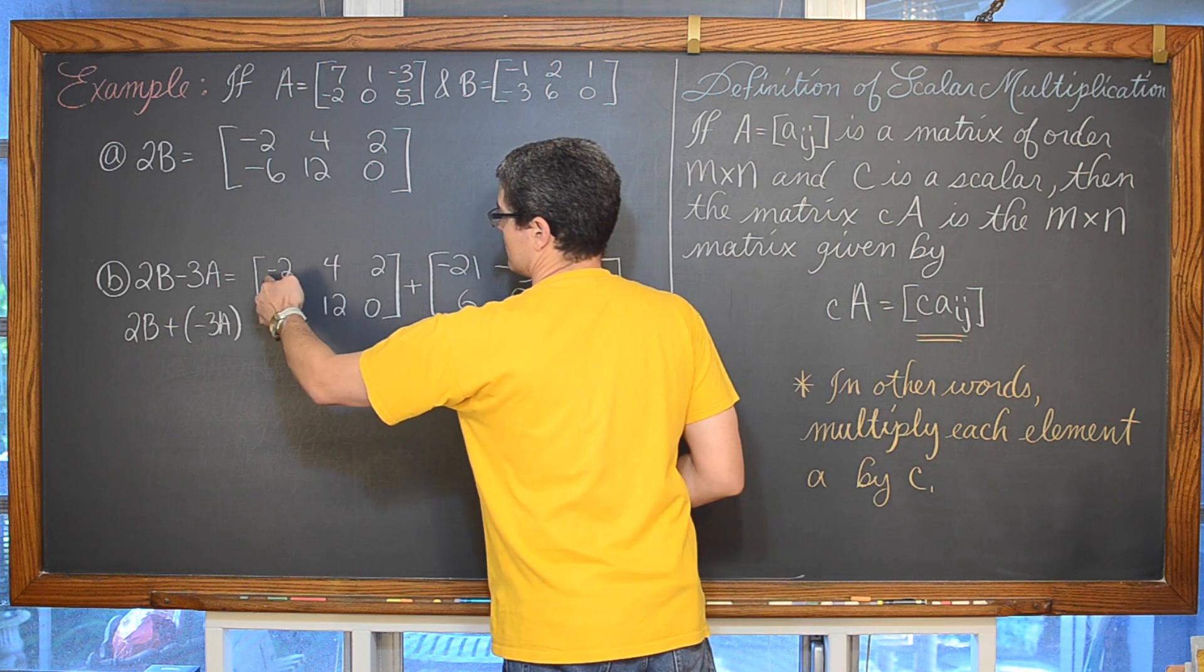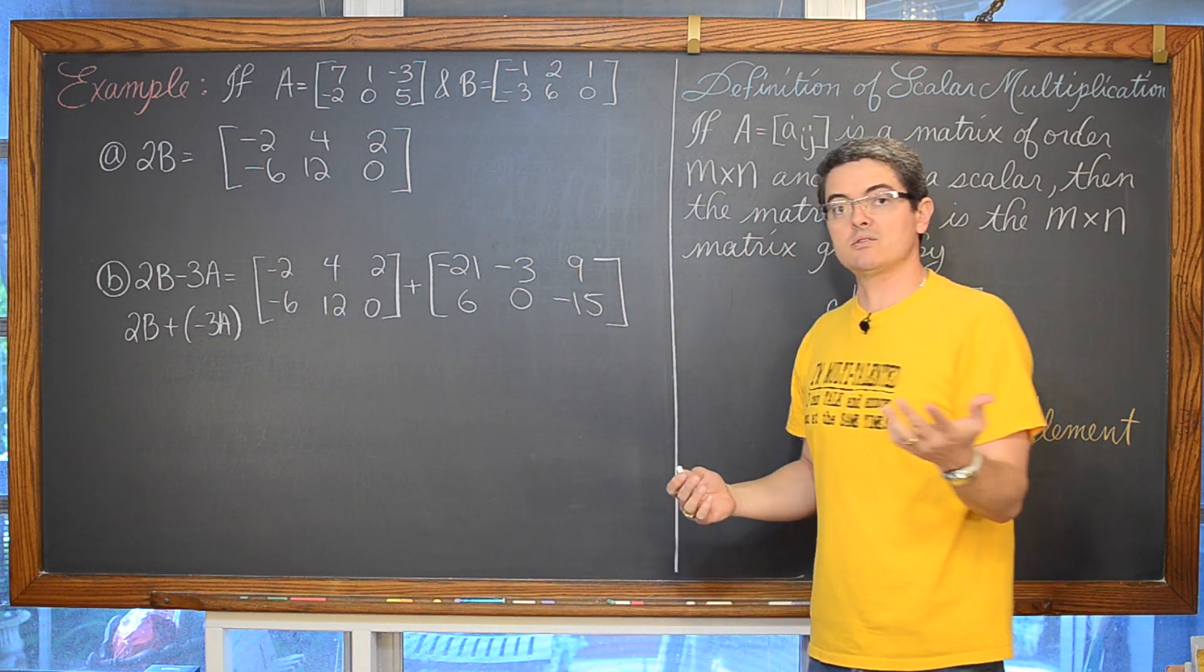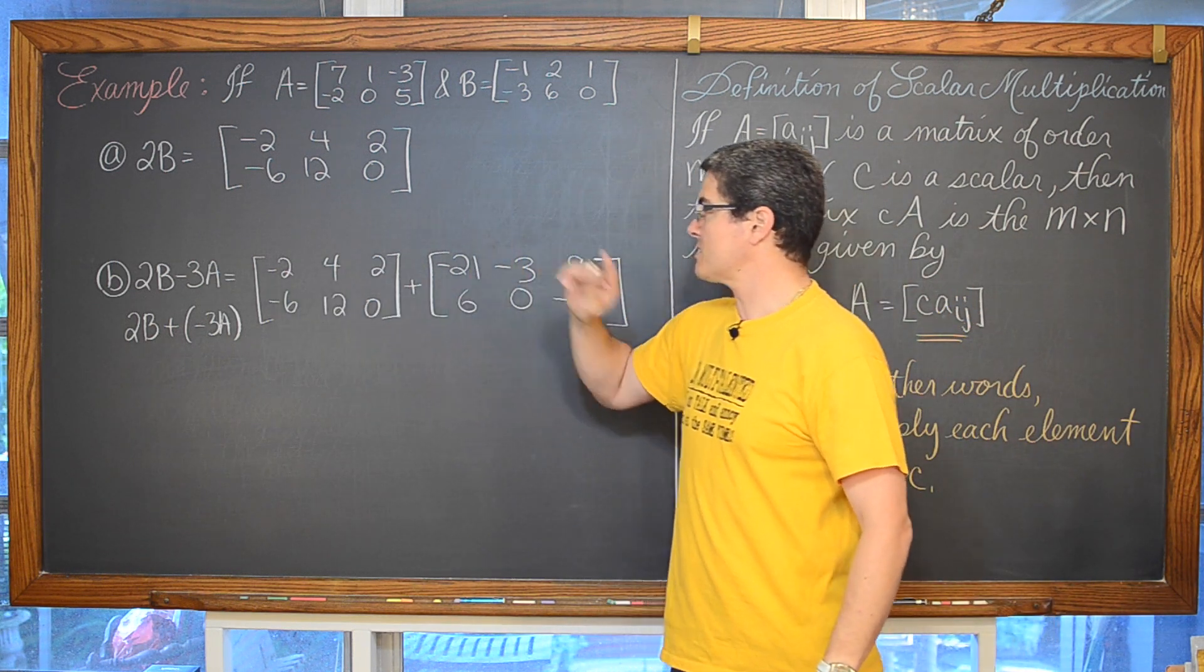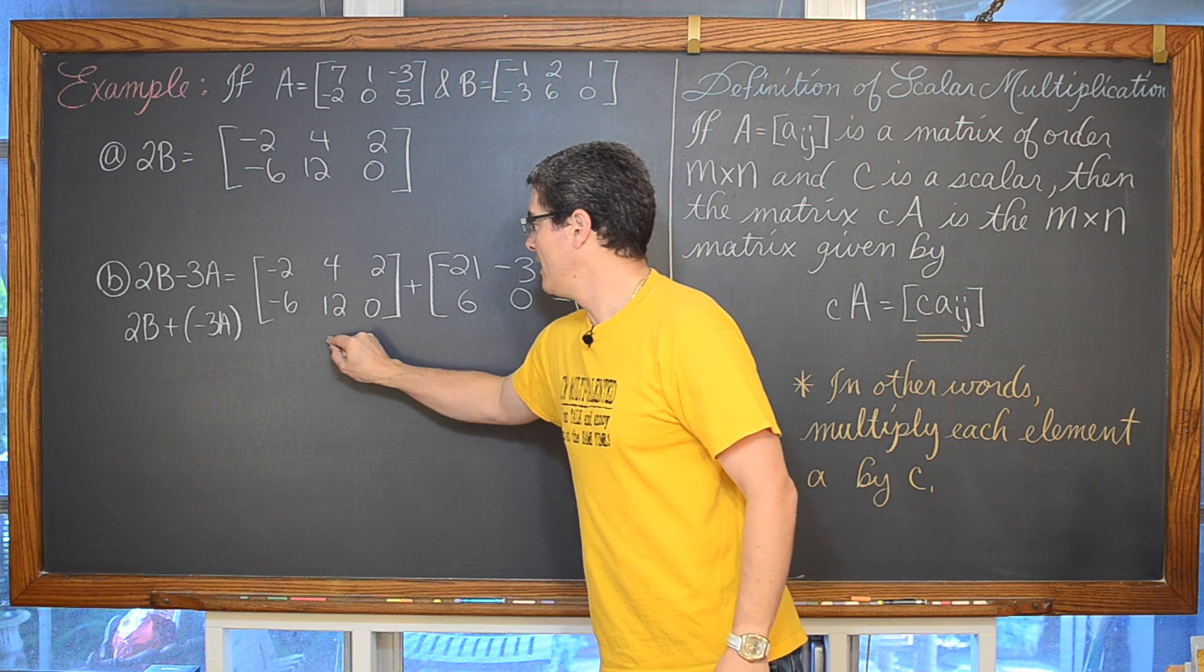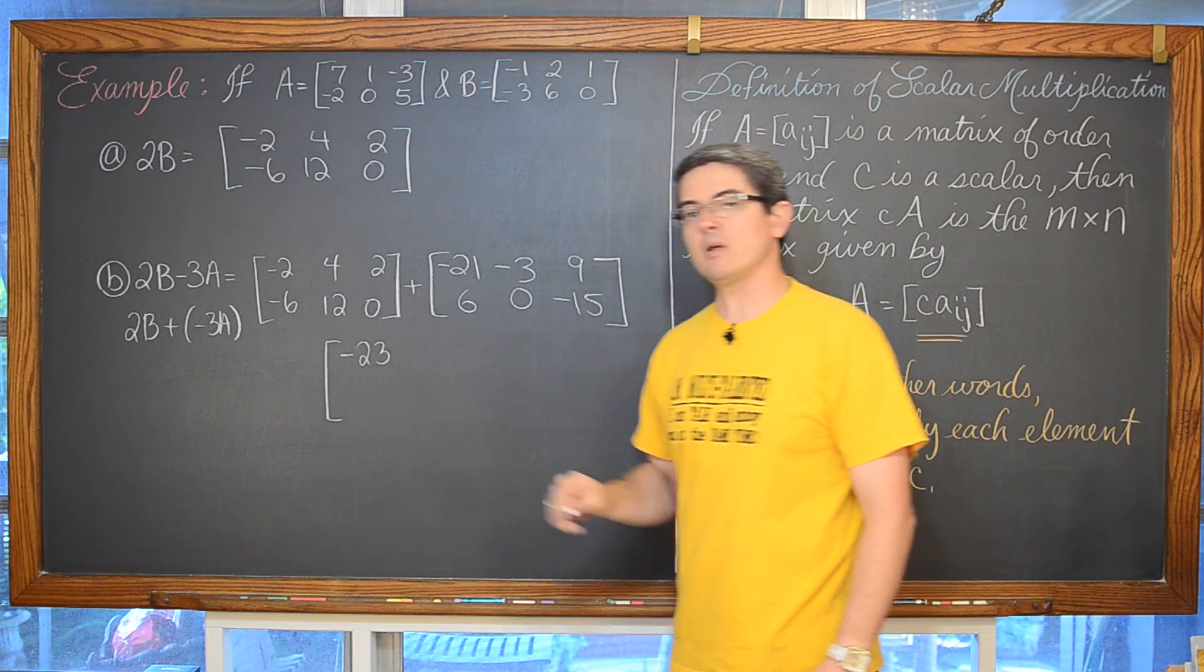Well now again we have a 2 by 3 matrix. Adding two matrices of the same order is a piece of cake. Negative 2 plus negative 21, when you are combining numbers with the same sign you want to add those and keep the sign. So we have negative 23.